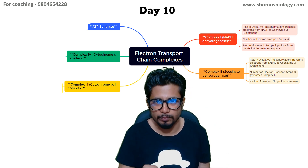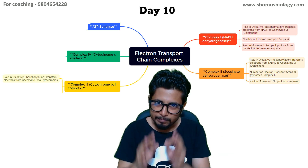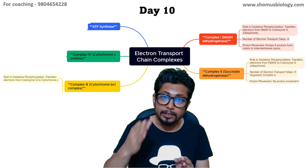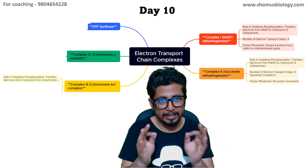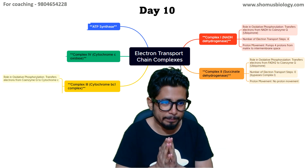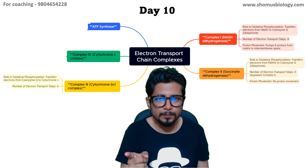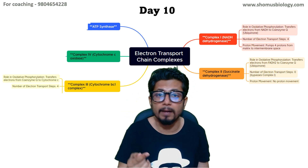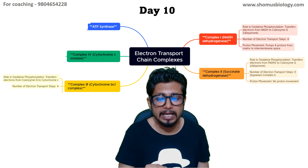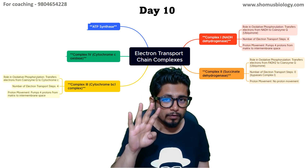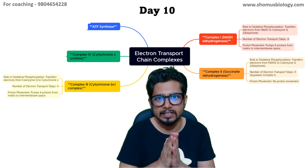Complex III, the cytochrome bc1 complex, transfers electrons from coenzyme Q to cytochrome c. Both coenzyme Q and cytochrome c are mobile electron carriers in the mitochondrial inner membrane. The number of electrons transported here is four, and the number of protons pumped from the matrix to the intermembrane space is also four.